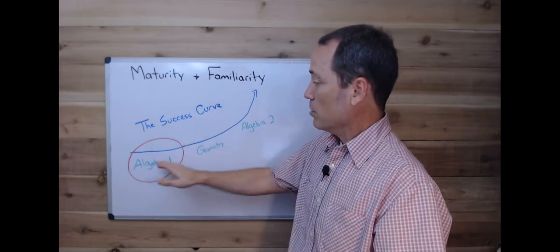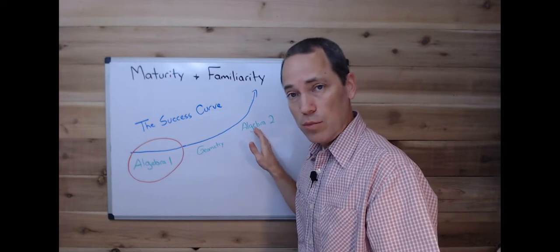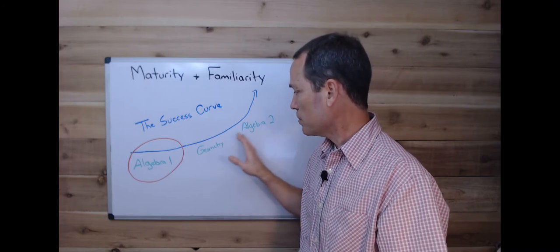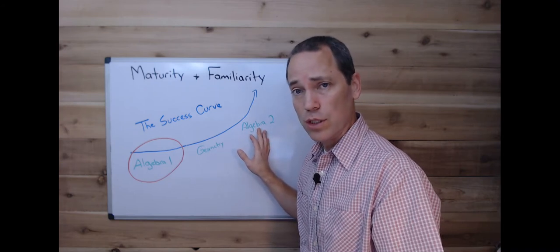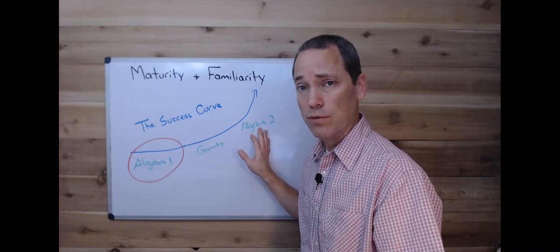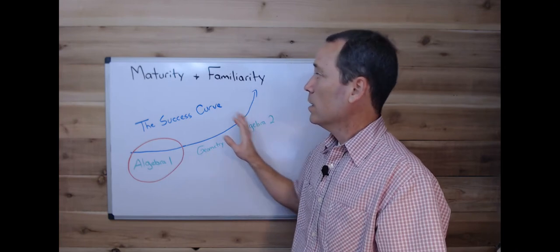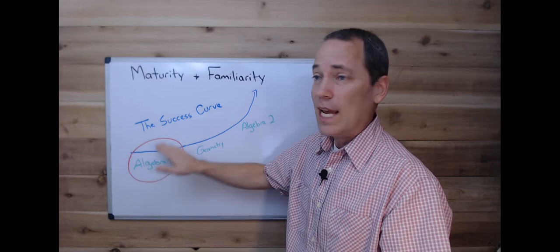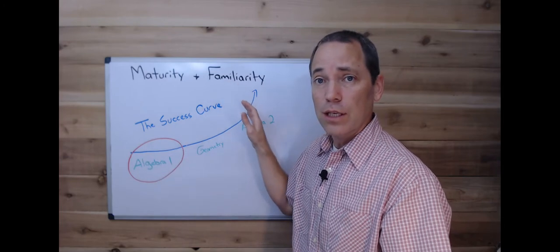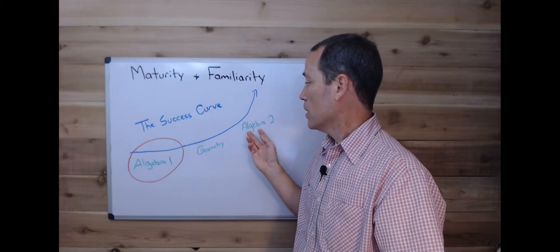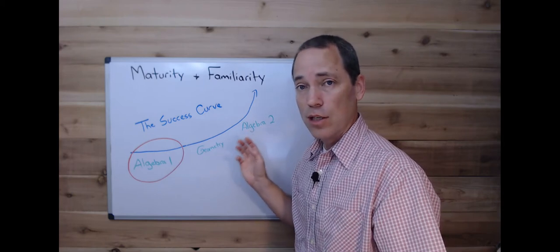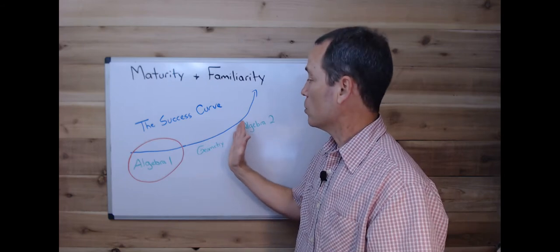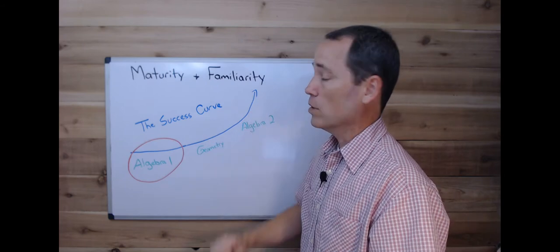And then a couple of years after Algebra 1, when you're in Algebra 2, and I do recommend putting geometry in between Algebra 1 and Algebra 2 for this reason, by the time they get to Algebra 2, which is arguably a much more difficult course than geometry, then two years of maturity has set in since they started Algebra 1, and a lot of familiarity. You're familiar with most of the concepts. There are some brand new concepts in Algebra 2, but they relate to the concepts in Algebra 1. So there's a lot of familiarity and students just find that they really take off.